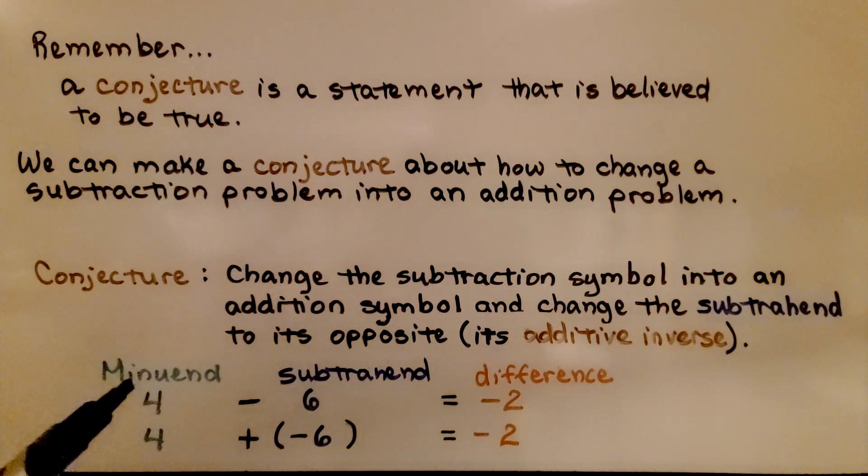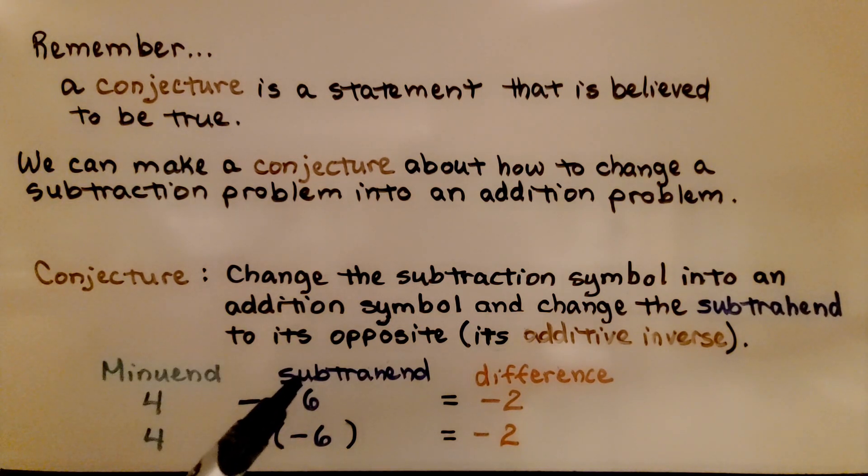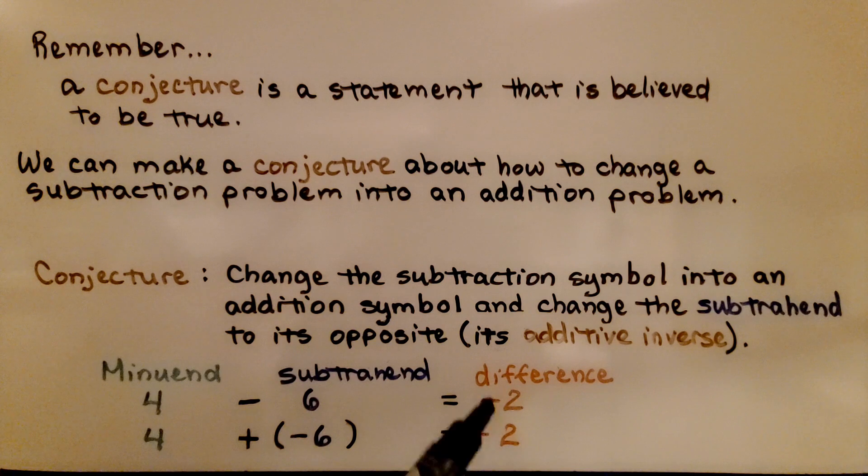If we have 4 for our minuend and 6 for our subtrahend and we have 4 minus 6, we can do 4 plus a negative 6. We'll get the same answer. We'll get negative 2 as a difference or we'll get negative 2 as a sum.